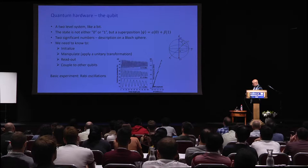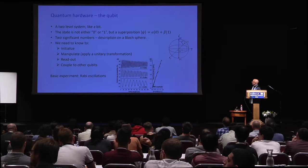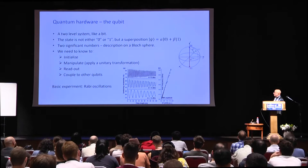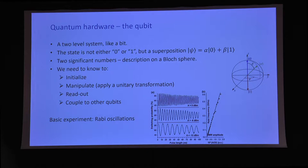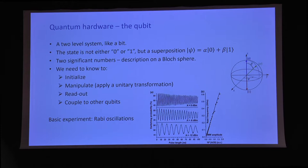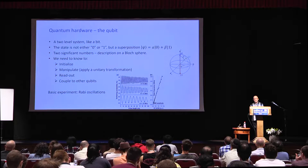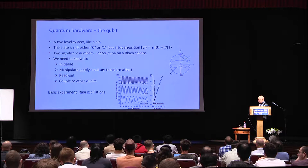To have a qubit, we need to know how to initialize it, how to apply a unitary transformation, how to read its final state, and how to couple it to other qubits. The basic experiment when you want to convince yourself that your qubit is functioning is looking at Rabi oscillations, which indicate the qubit being able to be in a coherent superposition of two states.